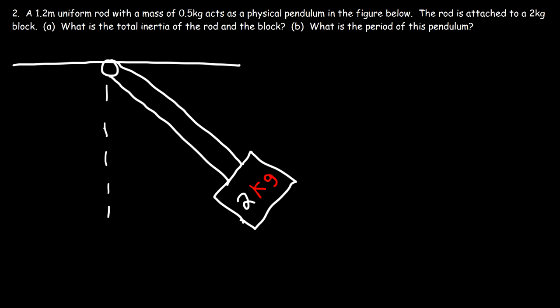Now how can we calculate the period of a physical pendulum if the rod is attached to a block? The rod is 1.2 meters long, it's a uniform rod, and the mass of the rod is 0.5 kilograms. What is the total inertia of the rod and the block? Let's say the mass of the rod is capital M and the mass of the block is lowercase m. The inertia of the rod with the axis of rotation at its end is 1/3 M·L².